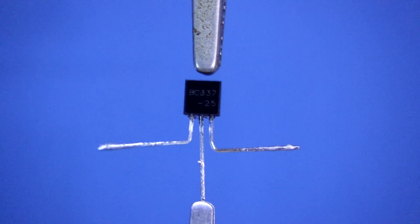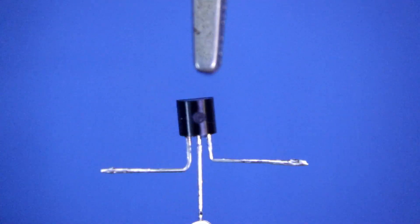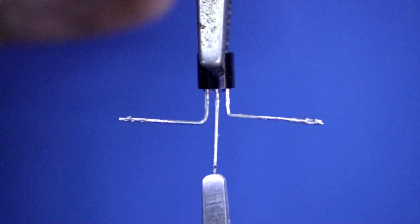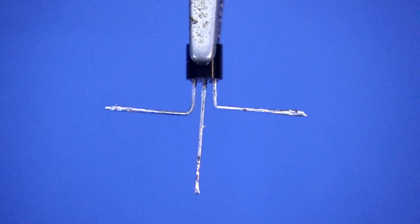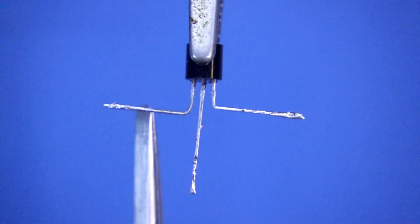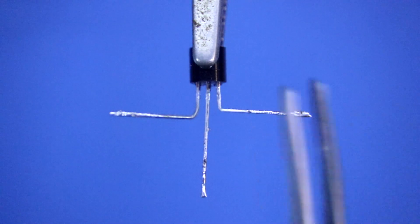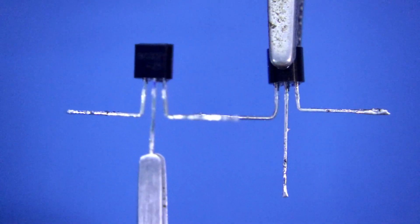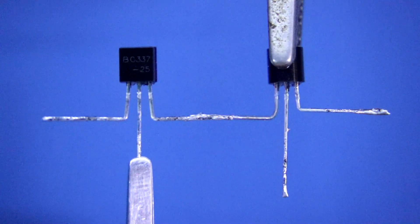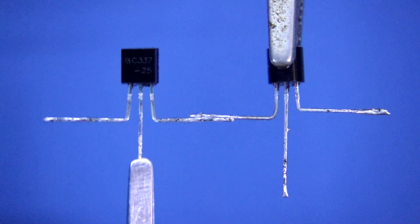First we have to do like this and then I am keeping it here. Now this is emitter, base and collector. Now I will solder it like this. We have to solder both the emitters.